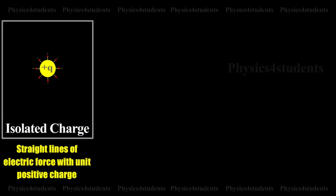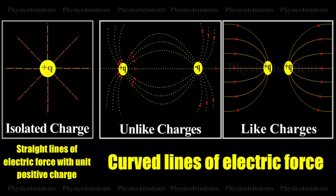Electric line of force is an imaginary straight or curved path along which a unit positive charge tends to move in an electric field.